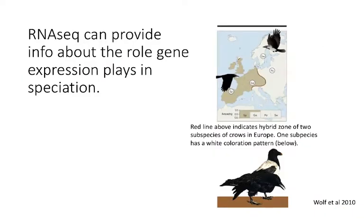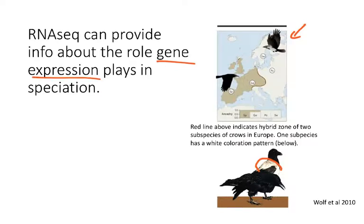RNA-seq can also provide information about speciation and the role gene expression plays in it. This is an example of two subspecies of crows with different phenotypes — one has a white collar, the other is pure black — with a hybrid zone shown in Europe. When researchers looked at nucleotide variation to find genetic mechanisms causing these phenotypic differences, there were essentially no nucleotide differences or SNPs between the two subspecies. This means gene expression is what's actually causing these phenotypic coloration differences, indicating that in early stages of speciation, gene expression may play a really important role.